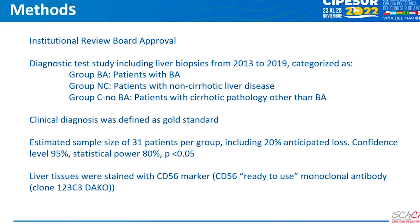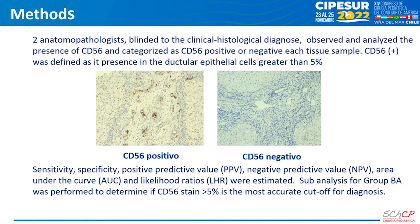An estimated sample size of 31 patients per group was used, including 20% anticipated loss, confidence level 95%, statistical power 80%, p-value less than 0.05. Liver tissues were stained with CD56 markers using a ready-to-use monoclonal antibody, clone 123C3DKO. Two anatomopathologists, blinded to the clinical histological diagnosis, observed and analyzed the presence of CD56 and categorized each tissue sample as CD56 positive or negative.